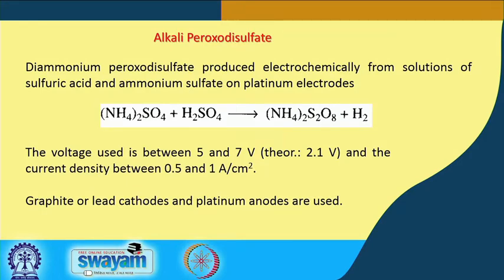Hello and welcome to this class of industrial inorganic chemistry, where we are talking about the different peroxo compounds starting from hydrogen peroxide. These are very reactive oxygen species in our biological world. When O2 gets one electron transfer, we get superoxide; a further electron transfer gives the peroxide system. Industrially, the preparation of these peroxides is also very important, and today we finish that particular part by knowing how we can synthesize alkali peroxodisulfate.